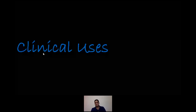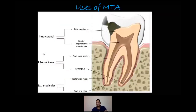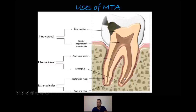There are six clinical uses of MTA, classified as intracoronal, intraradicular, or extraradicular. Extraradicular uses include perforation repair — when drilling through the root or furcation area into surrounding bone — and root end filling during apicoectomy. Intraradicular uses include apical plug or apical barrier formation in open apex cases, and root canal sealer. Intracoronal uses include pulp capping or pulpotomy, and regenerative treatment, which is an excellent option for certain cases.